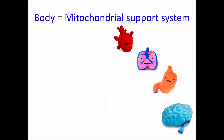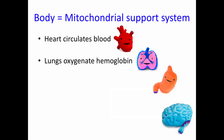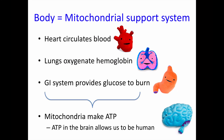Thus, the entire body can be considered a mitochondrial support system. The heart pumps the blood — the oxygen transport mechanism — and the lungs provide the interface for oxygen to get into the blood. The GI system provides the glucose to burn, all so that our mitochondria can efficiently make enough ATP to support our survival and to allow the higher mental functions that characterize us as humans.